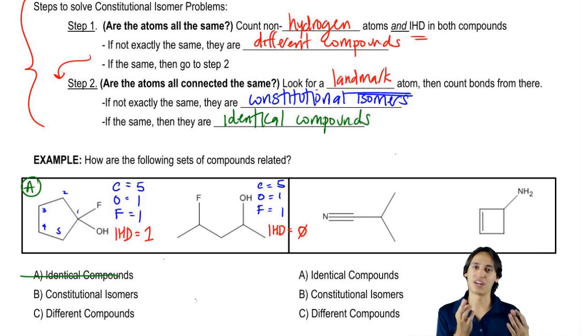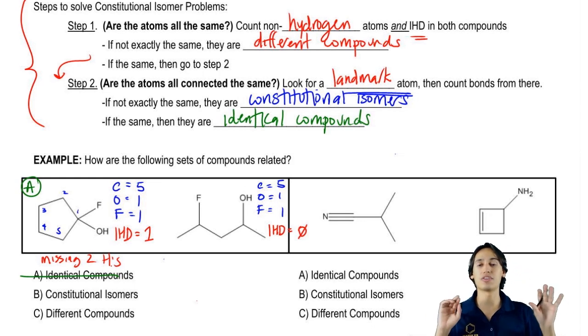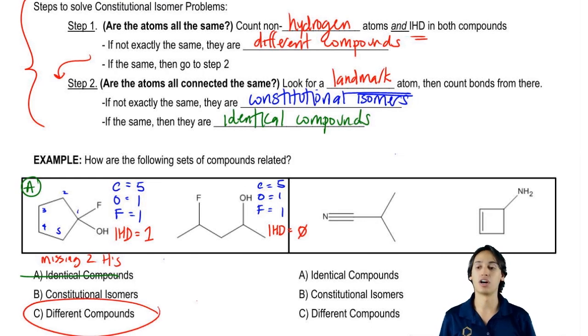What that means is - remember what it means for an IHD? - you're missing two H's. So do these two compounds have the same number of hydrogens? No. One has less than the other. So what are these going to be? Different compounds.